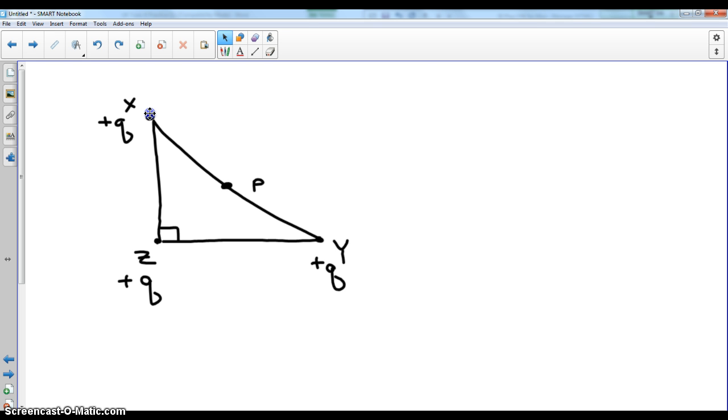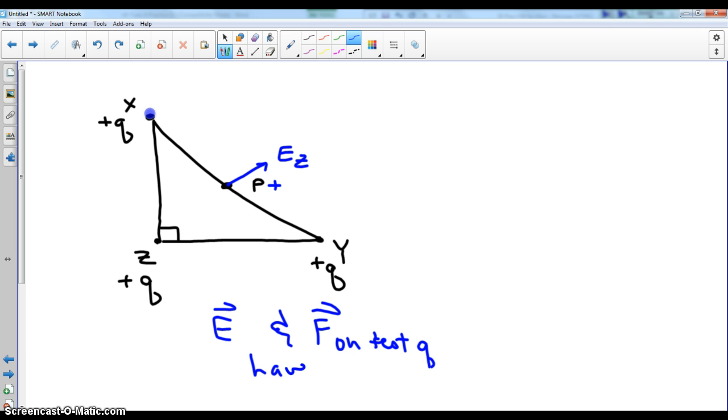This is easy. Easy as pi. You simply imagine we put a positive test charge at point P, at the dot. I'm not going to put it on the dot, because then it'll get in the way of my arrows. A positive charge at P would get pushed away from z. So the e-field strength would also be away. The e-field vector and the force vector on a test charge, test q, always have the same direction.